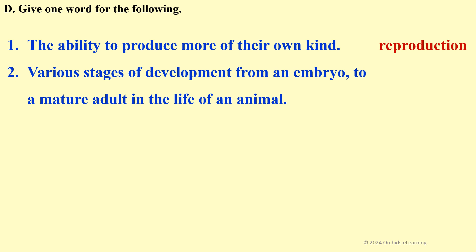Give one word for the following. The ability to produce more of their own kind: Reproduction. Various stages of development from an embryo to a mature adult in the life of an animal: Life cycle.